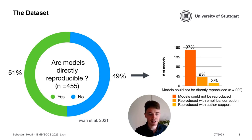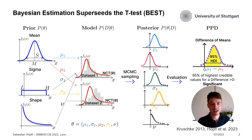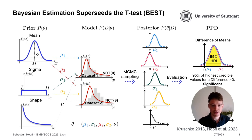We compared these directly reproducible models against those not reproducible at all. To compare these two groups, we used Bayesian estimation — in particular, the Bayesian estimation supersedes the t-test model from John K. Kruschke. In a Bayesian context, we have a prior for the mean, sigma, and shape parameters of a non-central t-distribution, which we try to fit on every dataset we investigate.